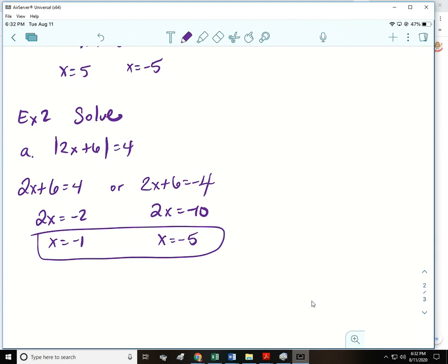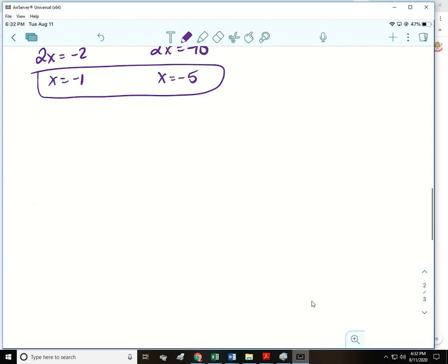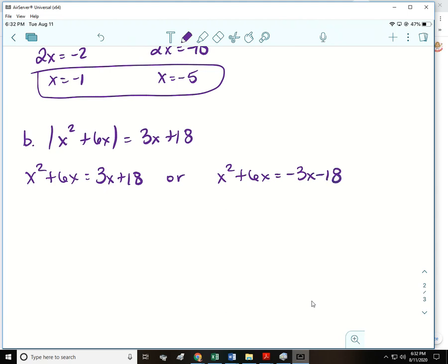Now they can get a little more difficult because we can get some quadratics in there. For b we have the absolute value of x squared plus 6x equals 3x plus 18. We're not going to let this mess with us. We are going to take what's inside the absolute value and leave it exactly like it is, and then it's going to be the opposite of the other side. This is two quadratic equations that we're going to solve so we will get everything on one side by subtracting the 3x and then subtracting the 18.